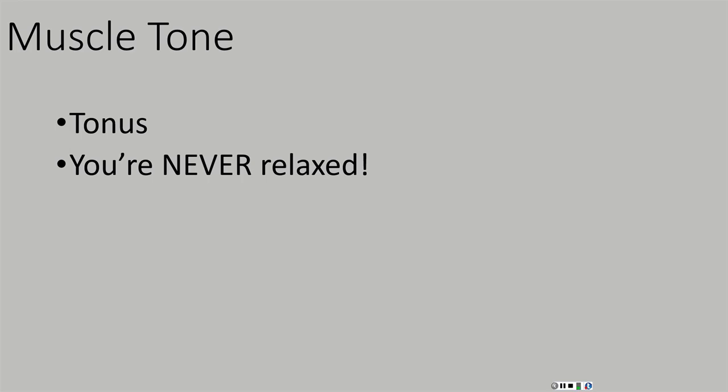Muscle tone, or tonus: you are never fully relaxed because your central nervous system is constantly sending low levels of signals to your muscles. We alternate — sending signals to one motor unit and then another. So we're constantly having a little bit of stimulation to our muscles, which means our muscles are constantly just a little bit contracted. This is true even when you are sleeping or knocked unconscious — we're still sending signals so that muscles are slightly contracted.